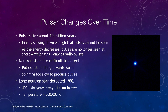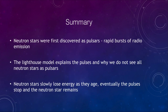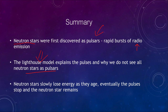To summarize: neutron stars were first discovered as pulsars, giving off rapid bursts of radio emission. We can use the lighthouse model to explain the pulses and why we do not see all neutron stars as pulsars — some are simply not pointing in the correct direction. Neutron stars will slowly lose energy as they age, the pulses will eventually stop, and the neutron star will remain behind, pretty much undetectable.